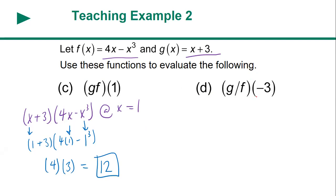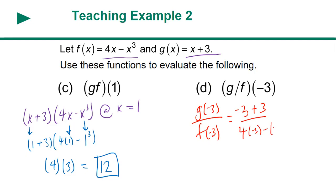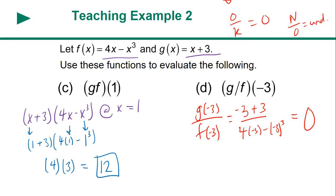Next, G divided by F at negative three. G(−3) = −3 + 3 = 0. F(−3) = 4(−3) − (−3)³. But do I have to evaluate the denominator? Why not? Because the numerator comes out to zero — so this is just zero. Remember, it is OK for zero to be in the numerator; it equals zero. But it's a no-go for zero to be in the denominator — that is undefined.